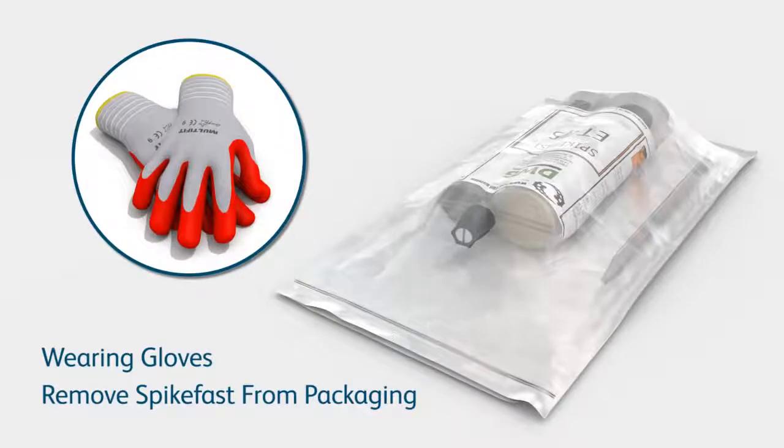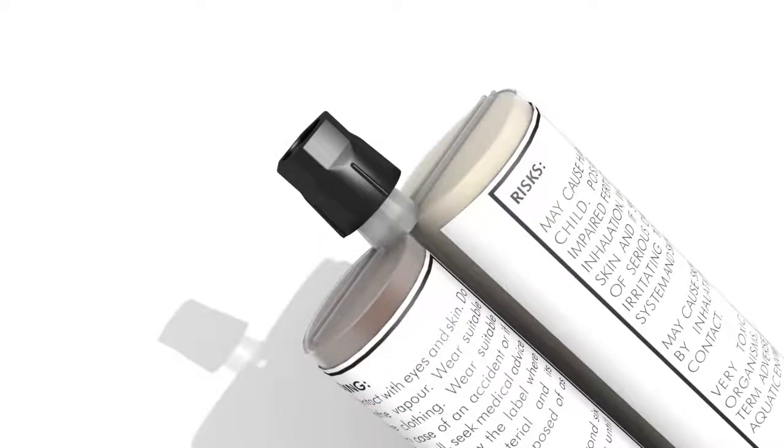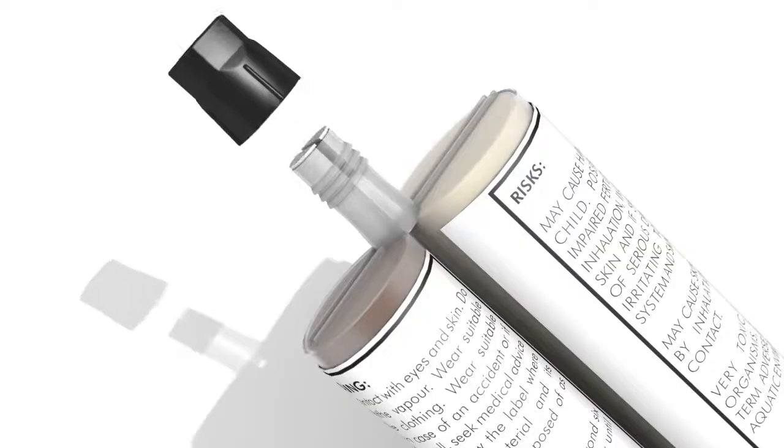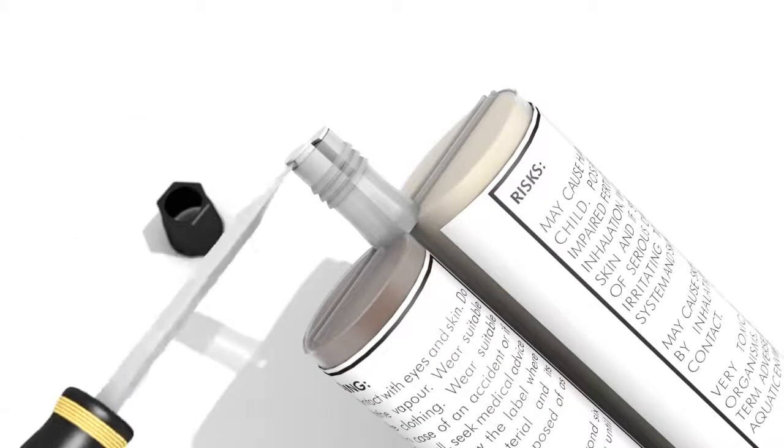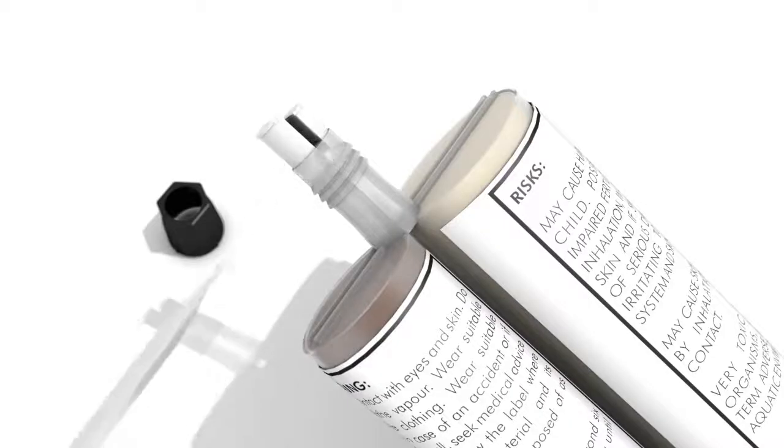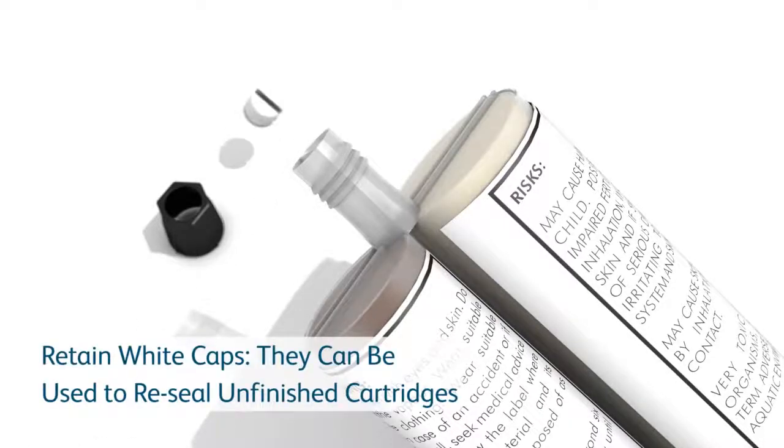Wearing gloves, remove SpikeFast from the packaging. Then remove the large black cap and using a small screwdriver or similar, prise off the white plastic cap from the top of the cartridge. Retain the white plastic cap for later use. If you don't use the full cartridge, it can be used at a later date with a new mixing tube.